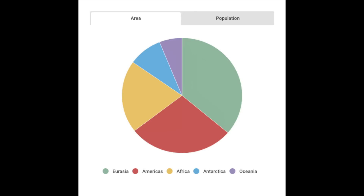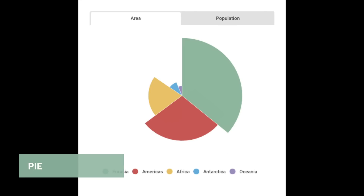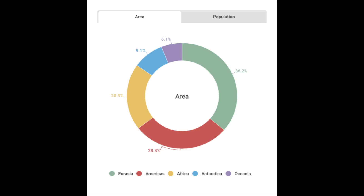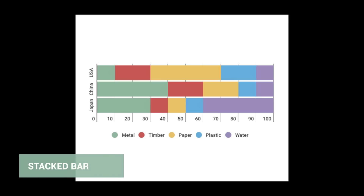When showing percentages or parts of a whole, pie charts are your friend and come in various styles such as irregular or donut, and can be customized to show callouts with the values. You could also use a bar chart and stack your values to add to 100%.